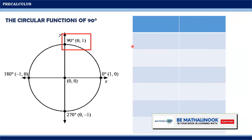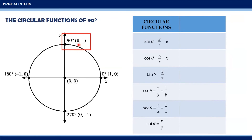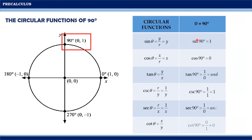Let us now go to the circular functions of 90 degrees. The 90 degrees has coordinates (0, 1), wherein x equals 0 and y equals 1. Hence, the circular functions for 90 degrees are: sine 90° = 1; cosine 90° = 0; tangent 90° = 1/0 = undefined; cosecant 90° = 1/1 = 1; secant 90° = 1/0 = undefined; and cotangent 90° = 0/1 = 0.